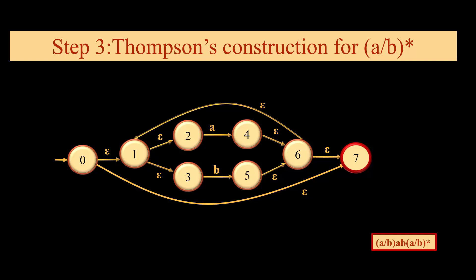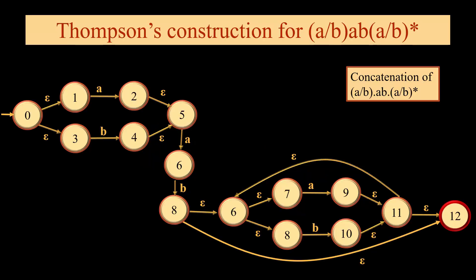When we will combine these all, ultimately we will have concatenated output for all three, that is starting from a or b, followed by ab, followed by (a or b) whole star. So this is the final output which we generate corresponding to the given input.